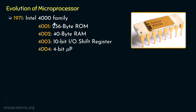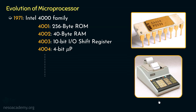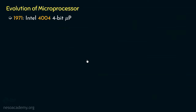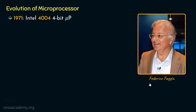In Intel's 4000 family, apart from the microprocessor and memory units, there were several support chips. It was not truly a general-purpose microprocessor, as it was basically designed for the 141-PF desktop printing calculator. The idea of the microprocessor was conceived by Ted Hoff, but Federico Faggin and his team at Intel realized the idea into hardware, producing the Intel 4004 4-bit microprocessor.